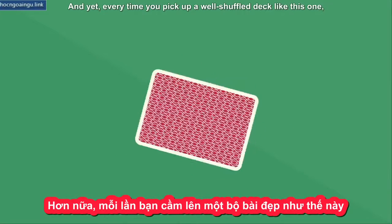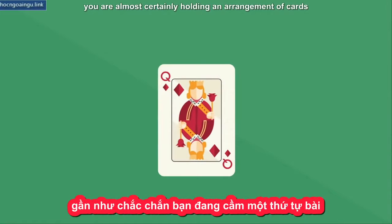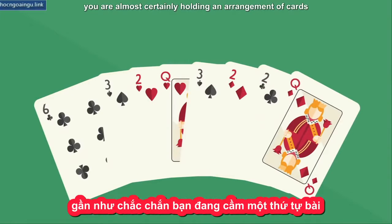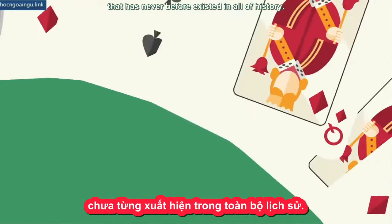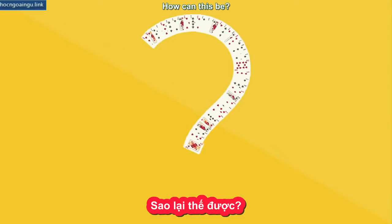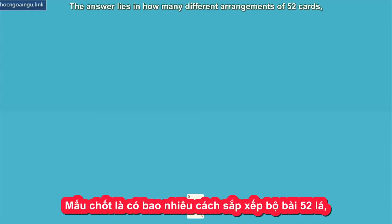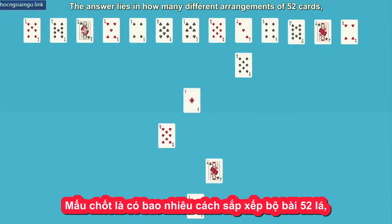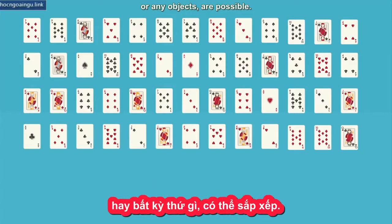And yet, every time you pick up a well-shuffled deck like this one, you are almost certainly holding an arrangement of cards that has never before existed in all of history. How can this be? The answer lies in how many different arrangements of 52 cards, or any objects, are possible.